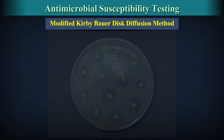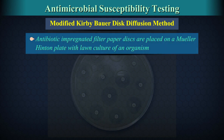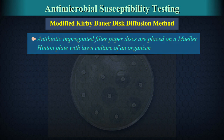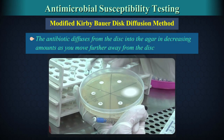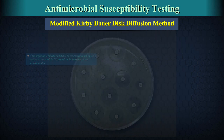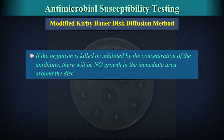Modified Kirby-Barr disc diffusion method: In this method, antibiotic-impregnated filter paper discs are placed on a Mueller-Hinton plate with lawn culture of an organism. The antibiotic diffuses from the disc into the agar in decreasing amounts as you move further away from the disc. If the organism is killed or inhibited by the concentration of the antibiotic, there will be no growth in the immediate area around the disc.